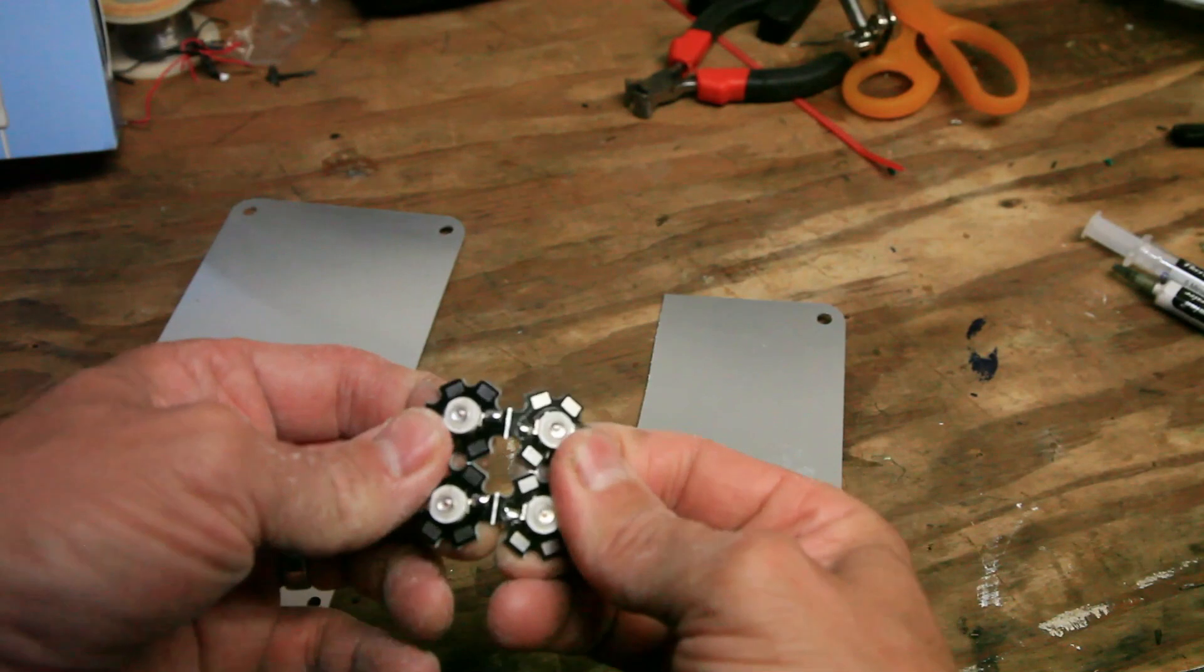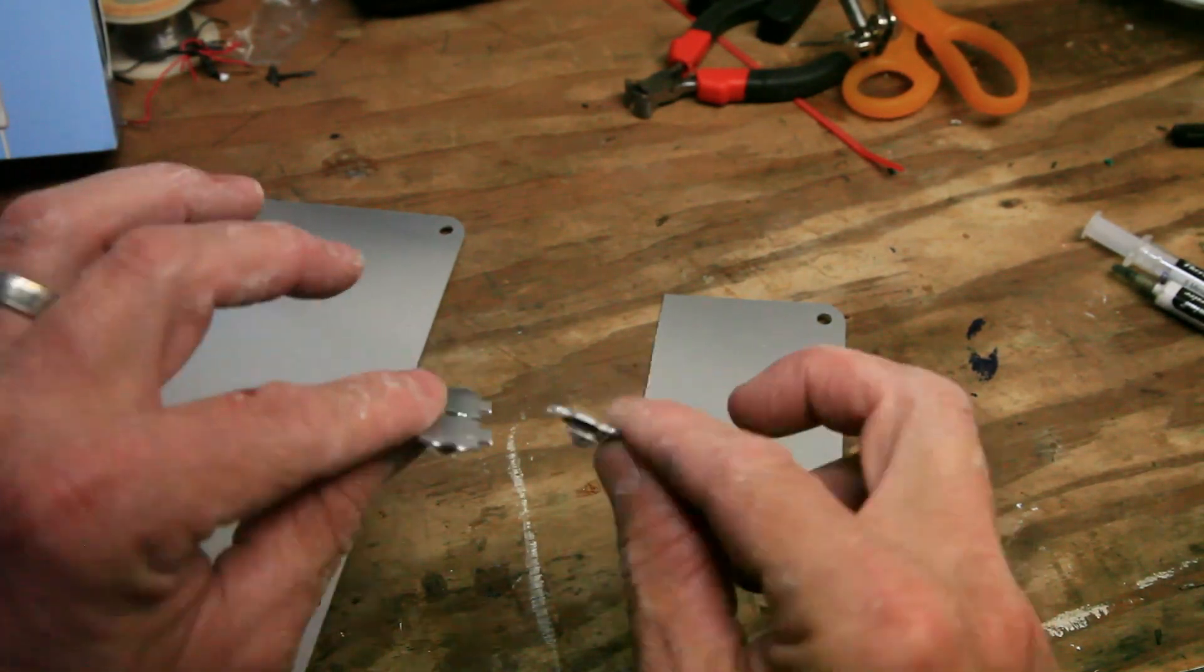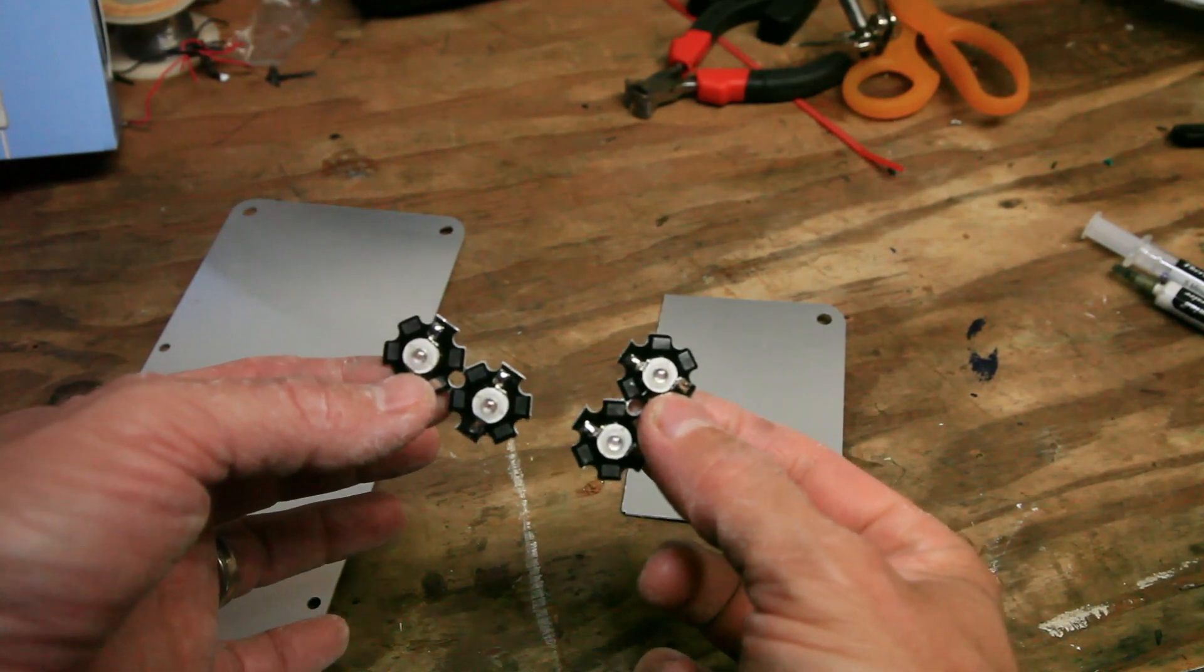The LEDs came mounted on PCB boards. They were about $2 a piece. I bought 3 and 5 watt LEDs, so I could choose later what I wanted to actually use.